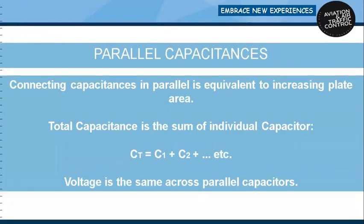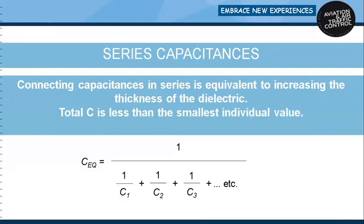Capacitors in series and parallel: connecting capacitances in parallel is equivalent to increasing plate area, so total capacitance is the sum of individual capacitors: CT = C1 + C2 + … and so on. Voltage is the same across parallel capacitors. Connecting capacitances in series is equivalent to increasing the thickness of the dielectric, so the total capacitance is less than the smallest individual value: 1/C_eq = 1/C1 + 1/C2 + 1/C3 + …